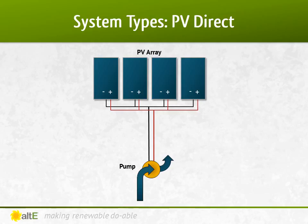It's a very basic system where the solar panels make the power and the pump uses what it can get. When the sun is bright and the panel is making more power, the pump will pump faster than when it is overcast or early morning or late afternoon. The key is to use the power when you have it. Generally, in the example of a pump, you'll be pumping to a tank or cistern during the day, allowing you to use the water all day and night without having to utilize batteries. It's easier to store water than power.